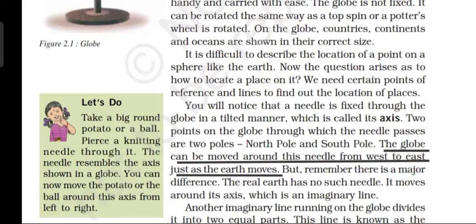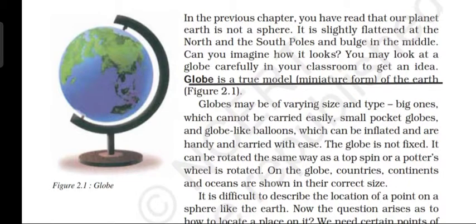In figure 2.1 you will see that a needle is fixed through the globe — through the top and also through the bottom. You will notice that this needle is tilted; it is slightly bent, not straight. This tilted needle passing through the top and bottom of the globe is the axis of the globe. It is around this needle that the globe rotates. The two points through which the needle passes are the north pole at the top and the south pole at the bottom.